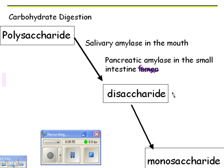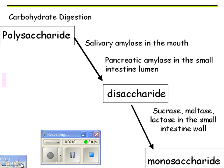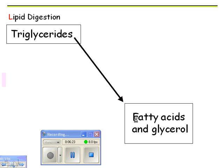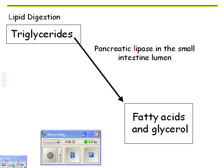Disaccharides are broken down by various enzymes into monosaccharides. For example, sucrase, maltase, and lactase are disaccharide-breaking enzymes located in the small intestine wall. For lipid digestion, you're breaking down triglycerides into fatty acids and glycerol. The enzyme is lipase — pancreatic lipase — working in the small intestine.